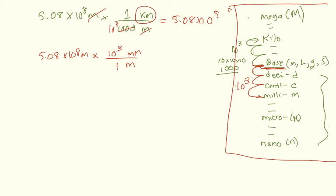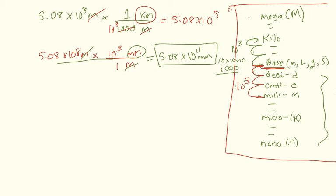This is easier than saying there's one meter for every 0.001 millimeters, or 10 to the negative third. It makes sense to say there are a thousand millimeters for every one meter, since the meter is bigger. My meters cancel and I'm left with millimeters. Multiplying the exponents: 5.8 times 10 to the eleventh millimeters. You should be able to do something like that on the exam very easily.